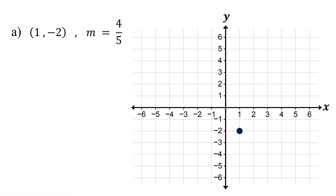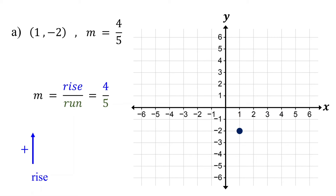The next step is to find another point using the slope. Slope is rise over run. Here, it is 4 over 5. Remember, when the rise is positive, move up. When it is negative, move down.